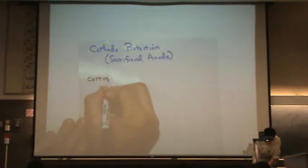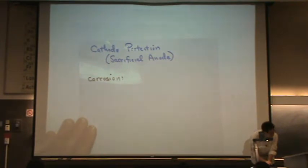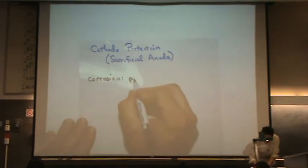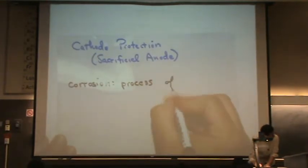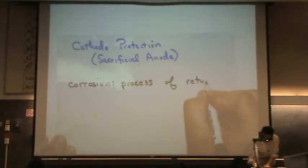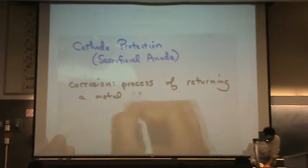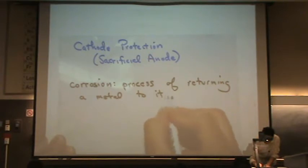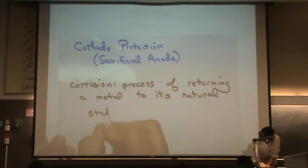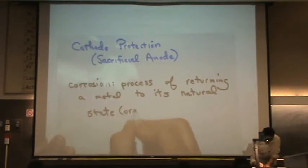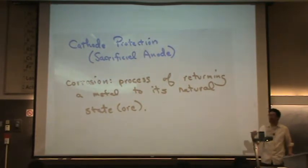Let me give you one more definition of corrosion. Cathodic protection is to prevent corrosion. Corrosion is the process of returning a metal to its natural state, which is an ore. Metals come as ores from the ground. So essentially, corrosion equals oxidation.